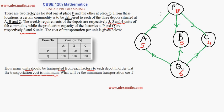From factory P, let us transport x units to depot A. Since depot A requires five units, the balance (5 minus x) will come from factory Q. In the same way, if I transport y units from P to B, the balance (5 minus y) will come from Q.